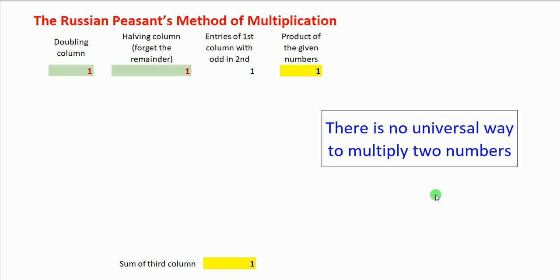Here is another method called the Russian Peasant's Method of multiplication. In this method we have two columns of numbers: one is called the doubling column and another is called the halving column. In the halving column, we keep halving the numbers and forget the remainder.